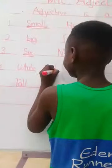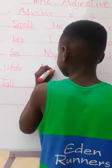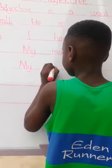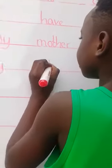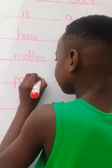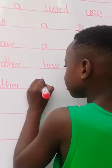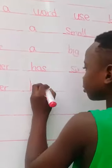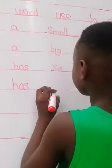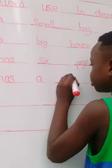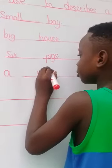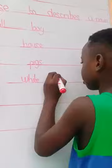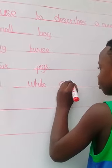Example four: my father has a white car. Example five: this is a tall tree.